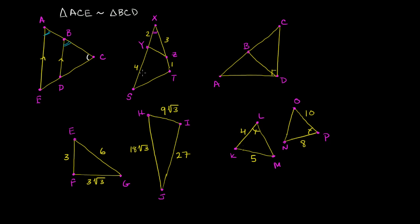One thing we do have is this angle that's common to the inner triangle and to the outer triangle. And they've given us a bunch of sides. So maybe we can use SAS for similarity — meaning if we can show the ratio of the sides on either side of this angle is the same from the smaller triangle to the larger triangle, then we can show similarity. So let's look at the shorter side on either side of this angle.